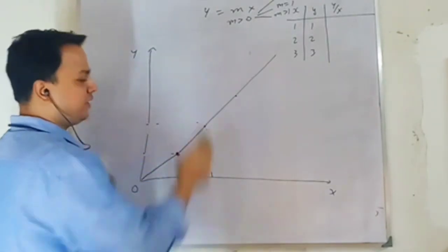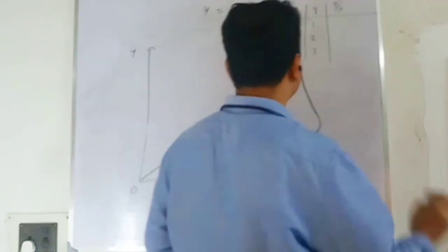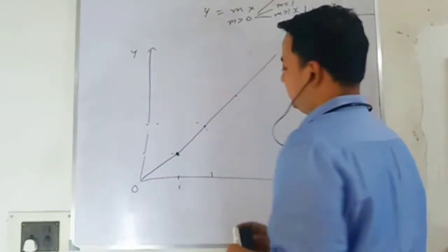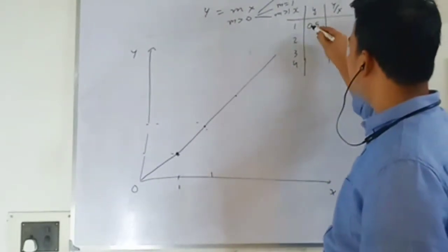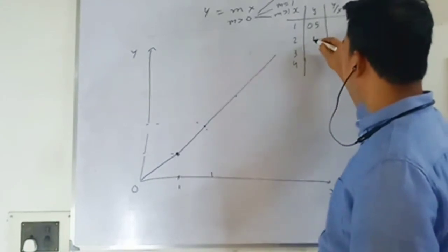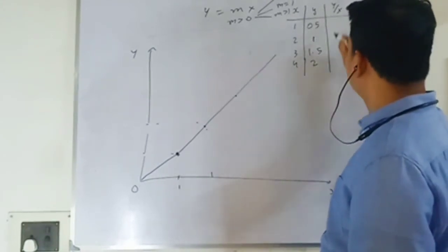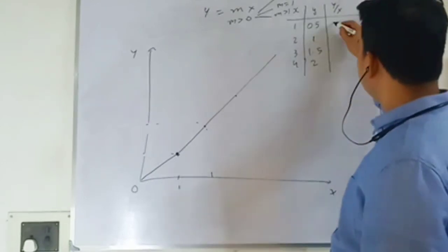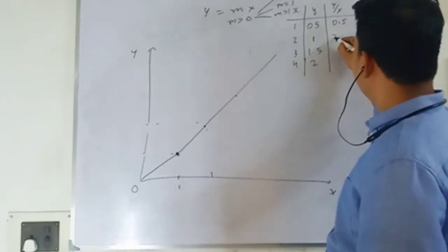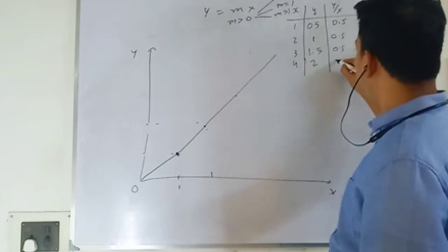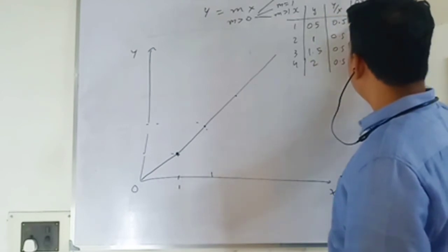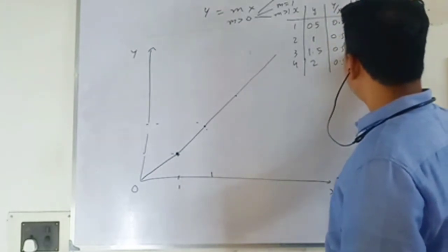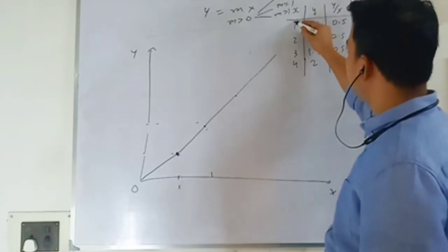For m less than one, when x is 1, y is 0.5, giving y/x = 0.5. Delta y over delta x is also 0.5 throughout. So average equals marginal, which is 0.5. The line drawn through these points falls below the 45-degree line. Any line below the 45-degree line corresponds to m less than one.